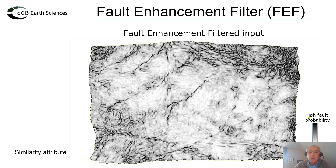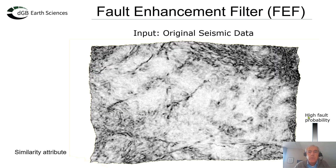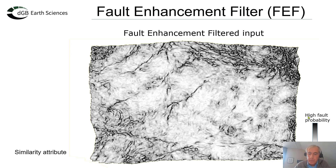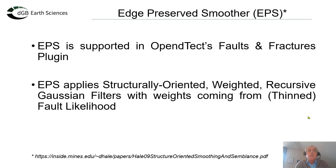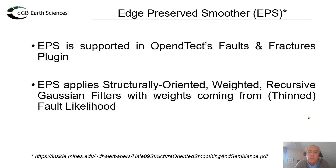Here similarity is computed on the horizon. This is when we have first computed the fault enhancement filter — so we have enhanced the edges — and then computed similarity. So this is without fault enhancement and this is with fault enhancement. However, there is an even better edge preserving filter, and that is our edge preserved smoother, which is supported in OpenDetect's faults and fractures plugin. This filter is also a structurally oriented filter, applying a recursive Gaussian filter that is also weighted.